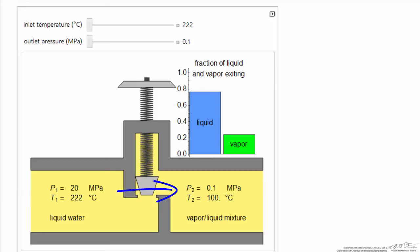As we expand to low pressure, we end up evaporating some of the liquid. Since we must maintain vapor-liquid equilibrium at the exit, the temperature at the exit corresponds to the saturation temperature for the exit pressure. So a tenth of a megapascal, which is one bar of pressure, corresponds to a saturation temperature of 100 degrees C.